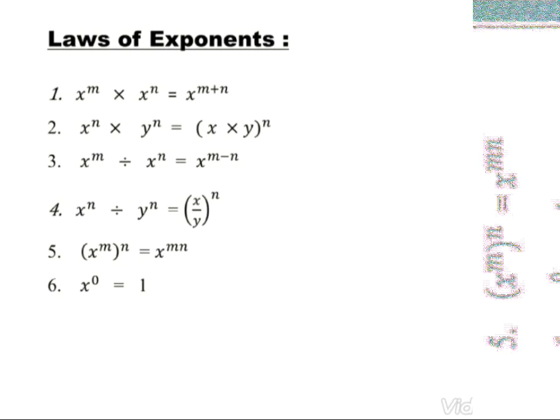The second law states x to the power n multiplied by y to the power n equals (x·y) to the power n, where y is also a non-zero rational number. The third law is: x to the power m divided by x to the power n equals x to the power m minus n.